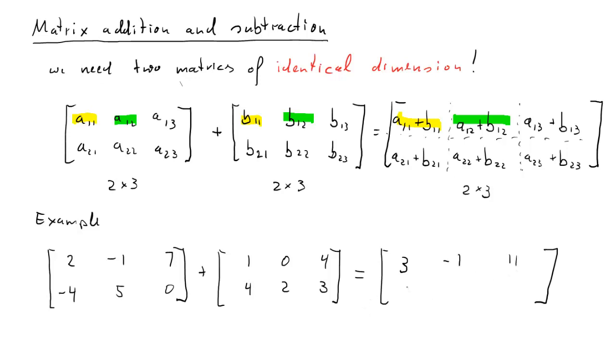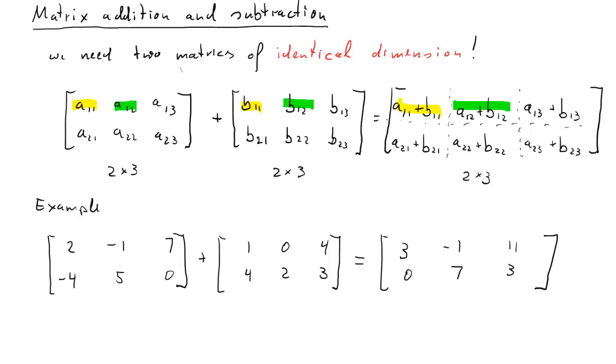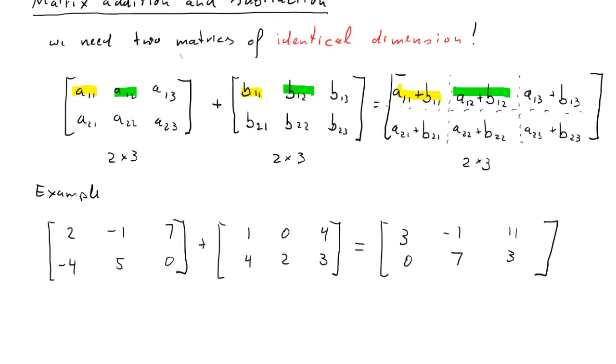Here's the solution. 3, negative 1, 11, 0, 7, 3. All right, this is the result of this matrix addition. It should be fairly straightforward.